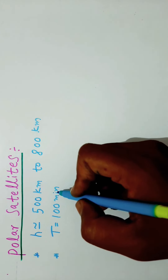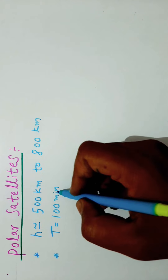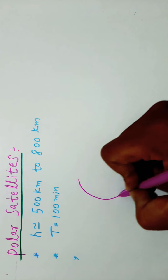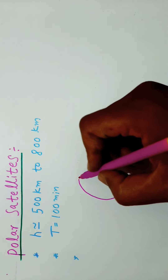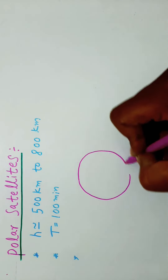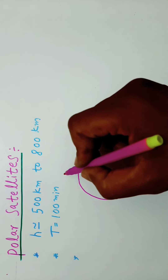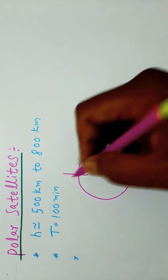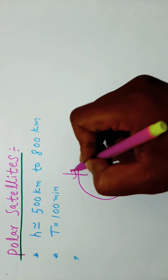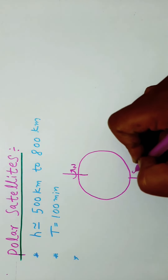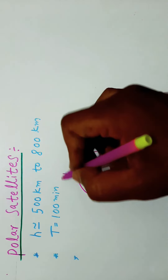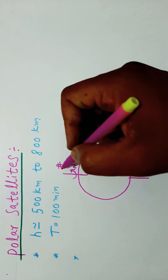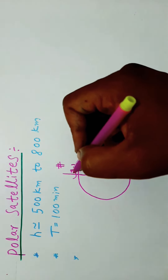A polar satellite crosses any altitude many times in a day. The polar satellites revolve around the poles of the Earth in the north-to-south direction.